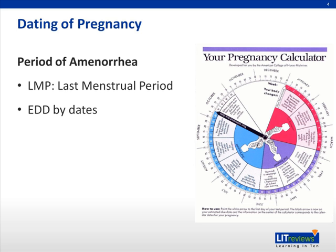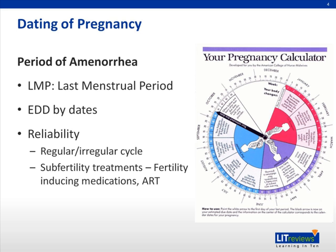The big problem with using just the last menstrual period to calculate pregnancy dating is reliability. If a patient's cycles are irregular, the dates may not be reliable. But if the person has used sub-fertility treatments like fertility-inducing medications or assisted reproductive techniques, the dating is more reliable. If a person has come off the combined oral contraceptive pill and got pregnant in the first cycle, those dates may not be reliable.